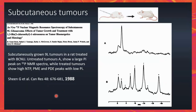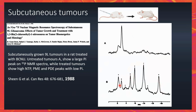Moving to subcutaneous models, this is a phosphorus NMR study from the late 1980s. As mentioned, these tumors are less perfused and become very hypoxic. If you just let the tumors grow, you would see hardly any ATP, a very high inorganic phosphate peak, and a highly acidic tumor. However, if you treat it with BCNU, you see that the tumor maintains its energy levels, the PI is low, and you can also see the PME and PDE peaks.